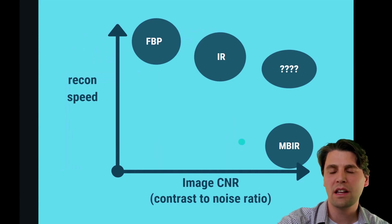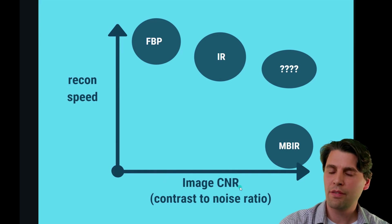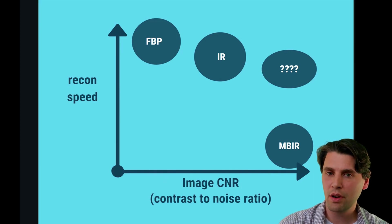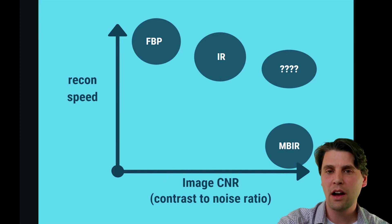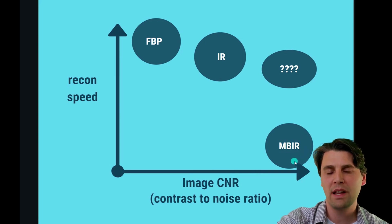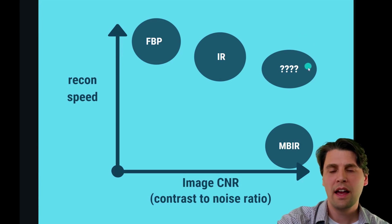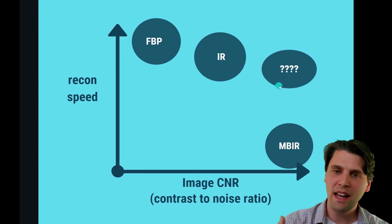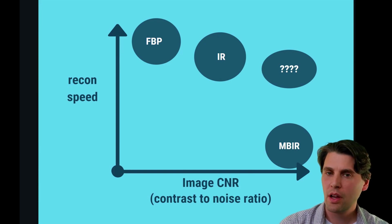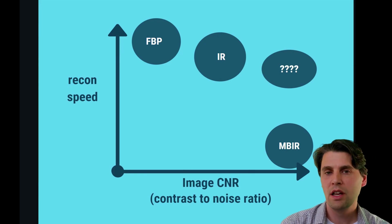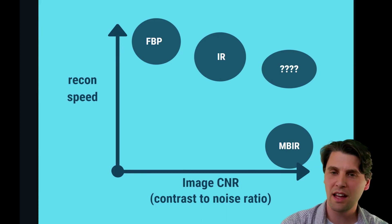We're talking about the reconstruction speed as a function of the CNR. If the dose is reduced, the noise in the images is going to go up, and the algorithm can help compensate for that. The full model-based iterative reconstructions could provide the most improvement in contrast-to-noise ratio, but at the penalty of a significant increase in reconstruction time. A few years ago, we asked ourselves: is there some technology that could generate images with that significant CNR boost, but also be done quickly enough so the images can be generated while the patient is still on the scanner or shortly thereafter?